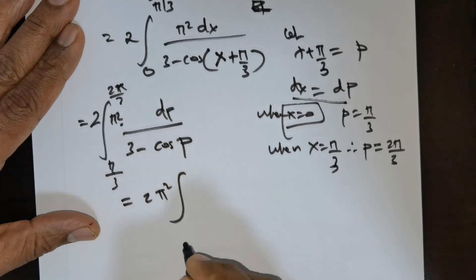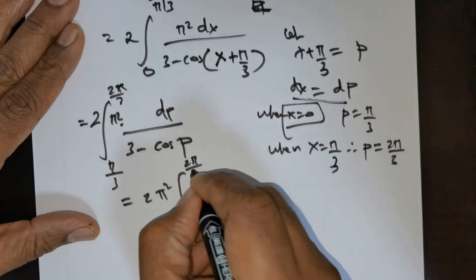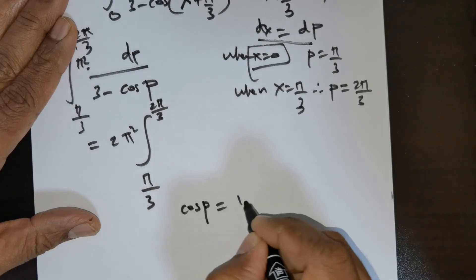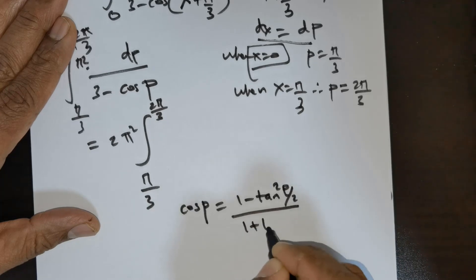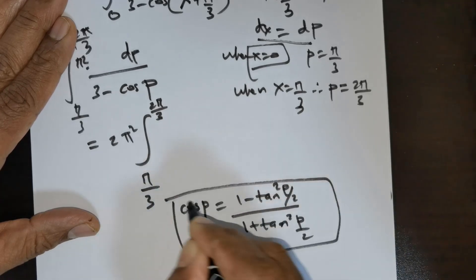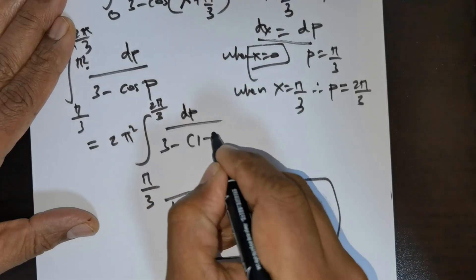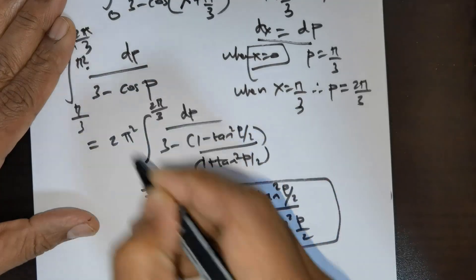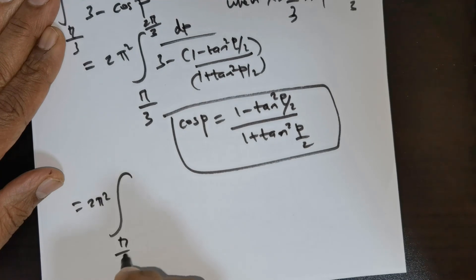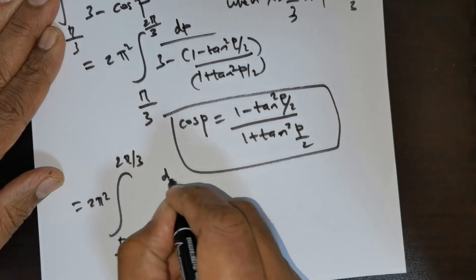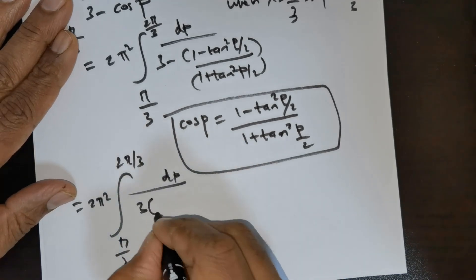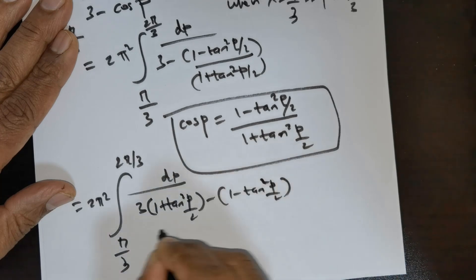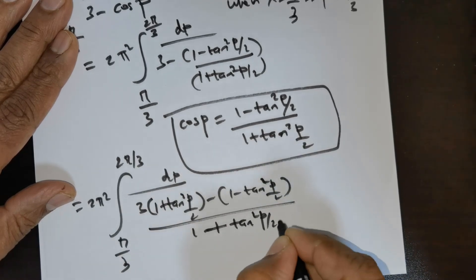I will use the trigonometric identity: cos p = (1 - tan²(p/2))/(1 + tan²(p/2)). Substituting this, I get 2π² times the integral from π/3 to 2π/3 of dp over 3 - (1 - tan²(p/2))/(1 + tan²(p/2)). Distributing, this becomes 2π² times the integral from π/3 to 2π/3 of dp divided by 3(1 + tan²(p/2)).